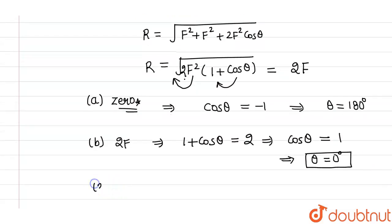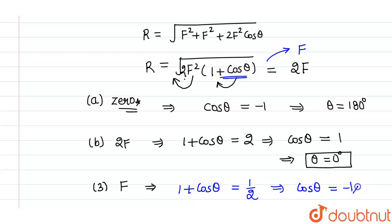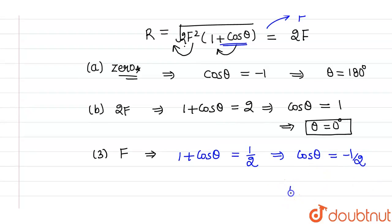Now in the third case, we are asked to find out that the resultant should be F only. For this resultant to be F, the value of (1 + cosθ) should equal 1/2. So 1 + cosθ = 1/2, which gives cosθ = −1/2. This implies that the value of θ is 120°.